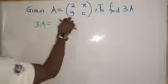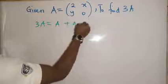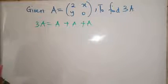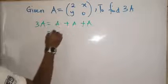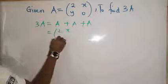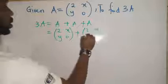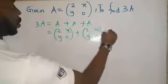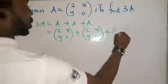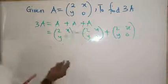So 3A, you have a choice of writing these 3 times because 3A simply means A plus A plus A. So you can now write it as 2, X, Y, 0, plus 2, X, Y, 0, plus 2, X, Y, 0.